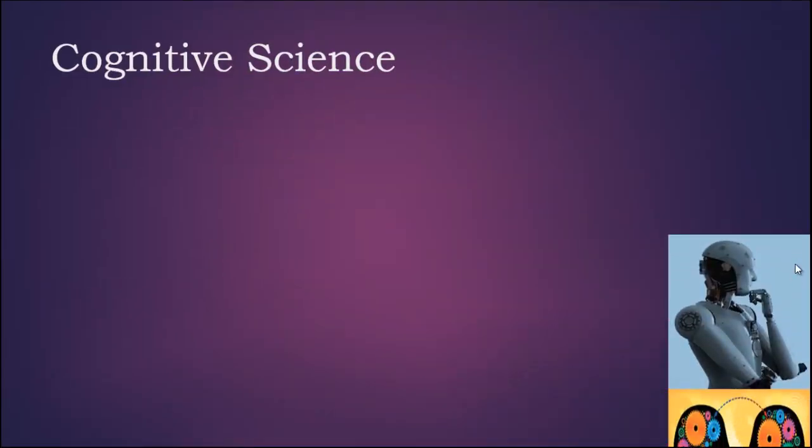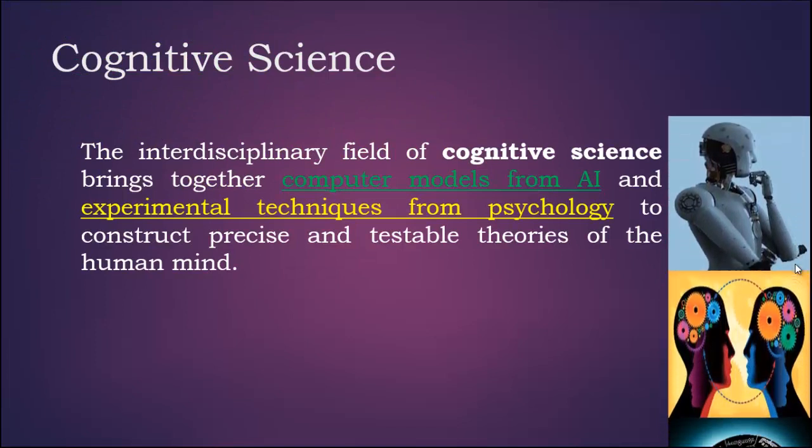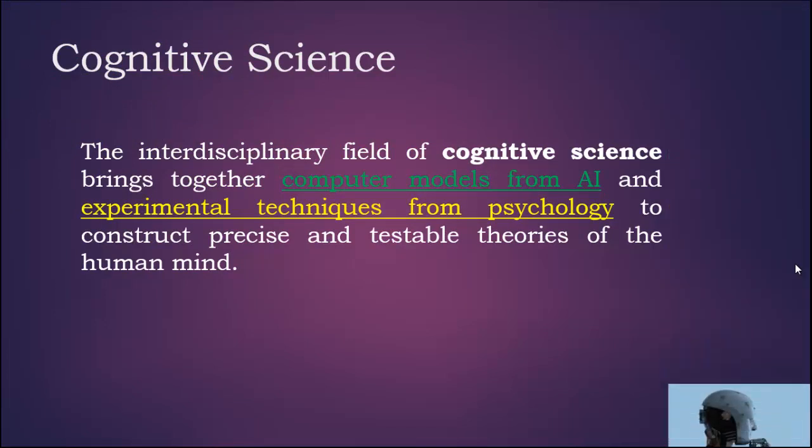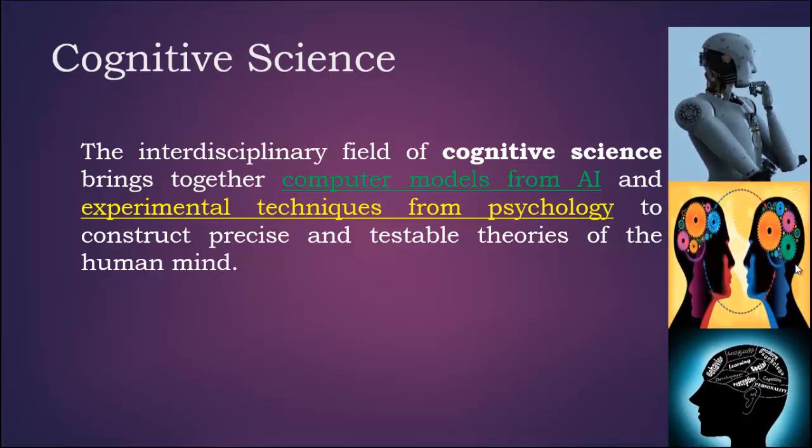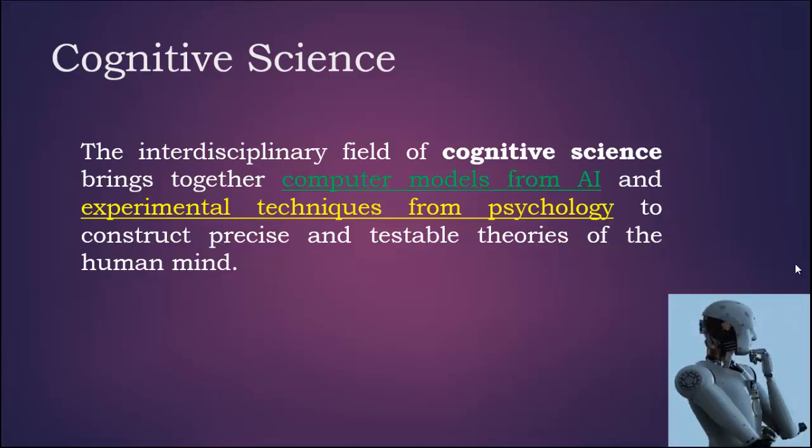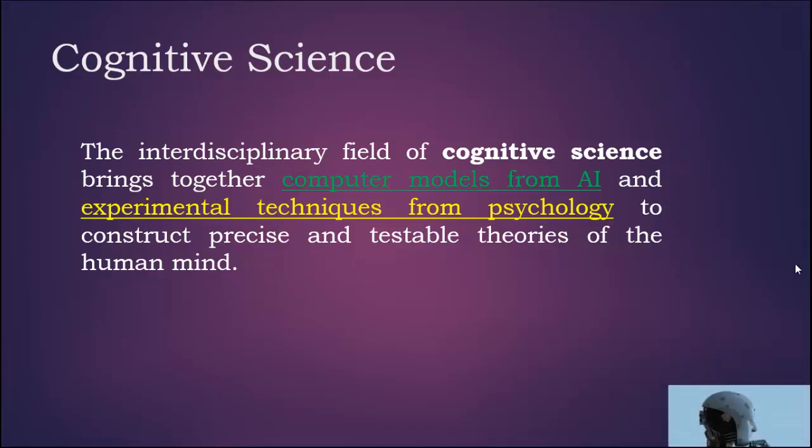What is cognitive science? Why do we need cognitive science? Cognitive science is an interdisciplinary field which brings together computer models from AI and experimental techniques from psychology to construct precise and testable theories of the human mind.